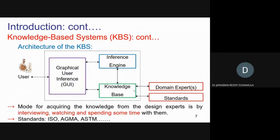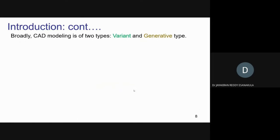To summarize: the user inputs the problem through the GUI to the knowledge-based system. The system goes to the inference engine first and checks whether a solution can be obtained. If yes, it goes to the knowledge base for the appropriate solution. If a solution is not available, it at least tries to give a suggestion. That solution is given back to the GUI so the user can see the result. This is the architecture of KBS.